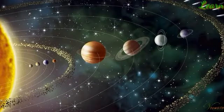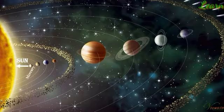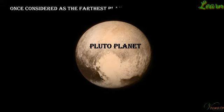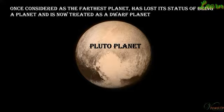In order of increasing distance from the sun, the planets are Mercury, Venus, Earth, Mars, Jupiter, Saturn, Uranus, and Neptune. Pluto was once considered the farthest planet but lost its status of being a planet and is now treated as a dwarf planet.